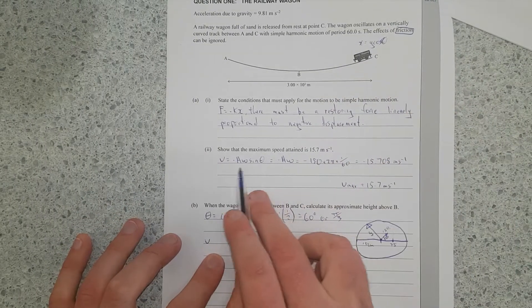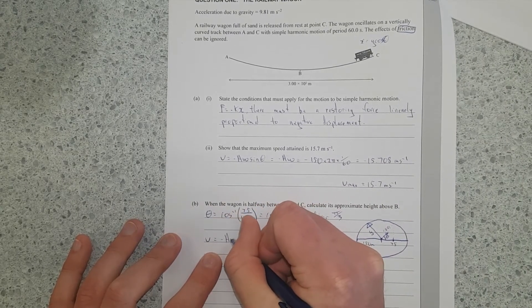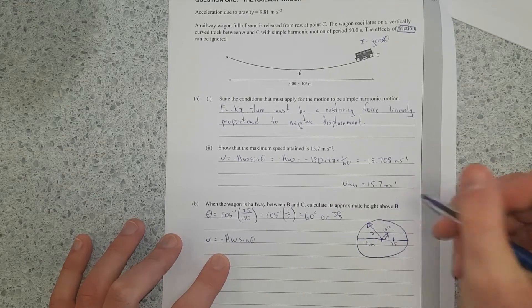So theta is equal to cos inverse, the adjacent is 75 metres, over 150 metres. And that will give us cos inverse 1 over 2 because 75 is half of 150. If you put that in your calculator, it gives you 60 degrees, or if you like using radians, that is pi over 3.